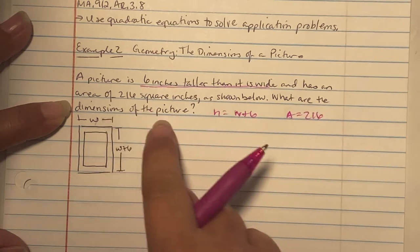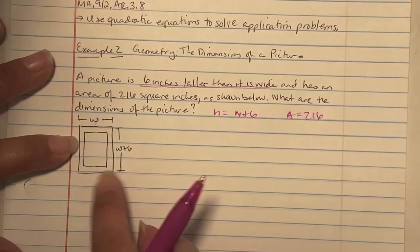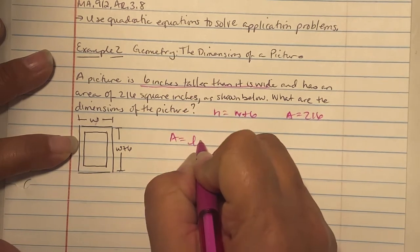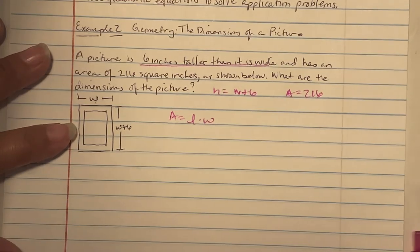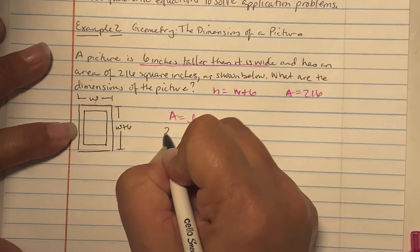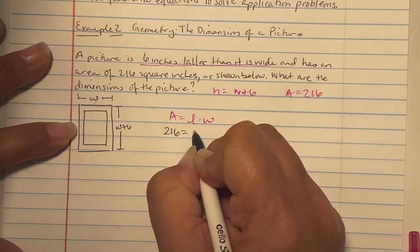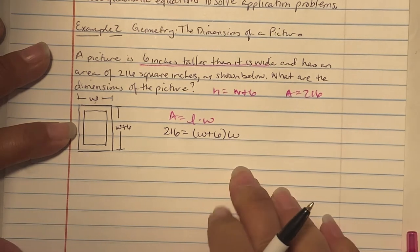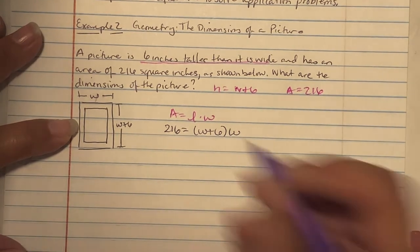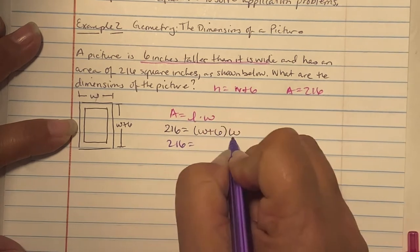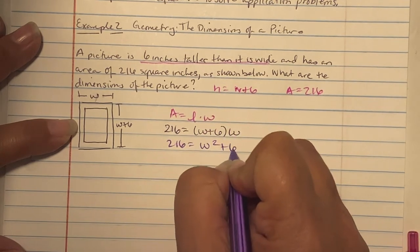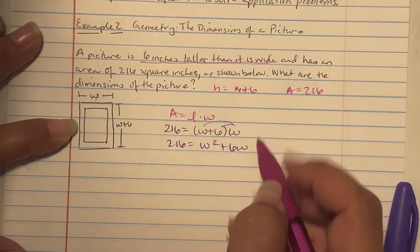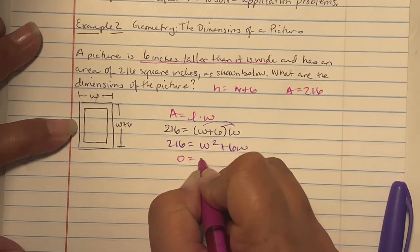They gave you a picture to represent it. Remember, area is length times width, or height times width. We have 216 equals W plus six times W. So we have 216 equals W squared plus six W, because I distributed. Subtract 216 over, so you get zero equals W squared plus six W minus 216.